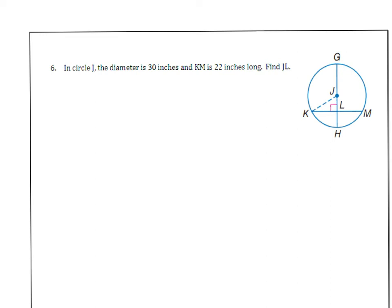Number six. In circle J, the diameter is 30 inches. KM is 22 inches. Find JL. So if the diameter is 30 inches, what's the radius? 30 divided by 2 is 15. That's going to be your radius. So I'm going to make a note here. The radius halfway across is 15. Then it says from K to M is 22. Well, K to M is going to get cut in half because JH is perpendicular to it. So if you take 22 and cut it in half, you get 11. This is 11. This is 11.